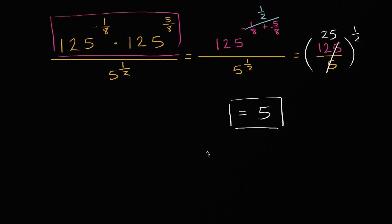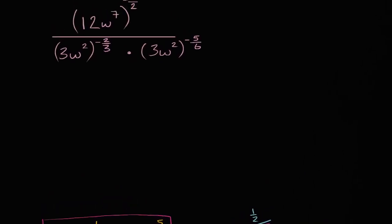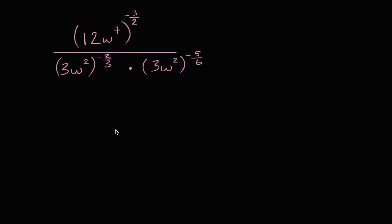Which is equal to 5. And we're all done — that simplified quite nicely. Let's do another one of these. This one is a little more interesting because we are starting to involve a variable — we have the variable w. But it's really going to be the same process. The thing that jumps out at me is the denominator. I have the same base, 3w squared, raised to one exponent, times the same base 3w squared raised to another power.